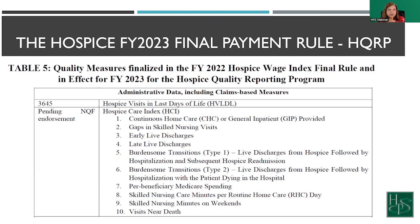Also, there has been some concern and a lot of questions surrounding number two, which is gaps in skilled nursing visits. This is the percentage of your patients that go more than seven days without receiving a nursing hospice visit. Questions have come up about whether this is registered nurses only or if LPN visits are counted. LPN visits are counted because it is skilled nursing visits, not just registered nursing visits.